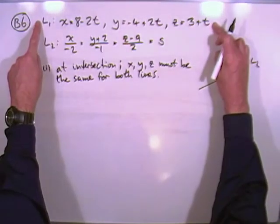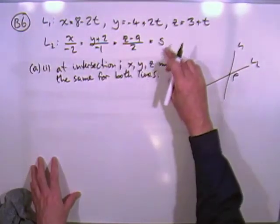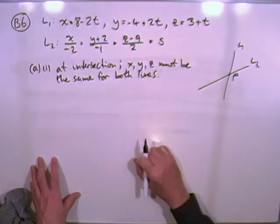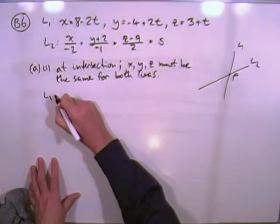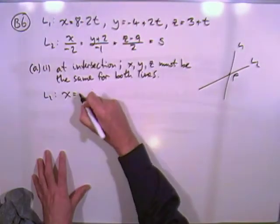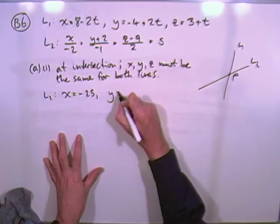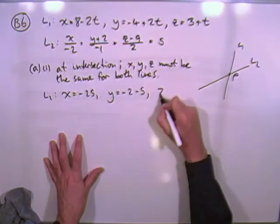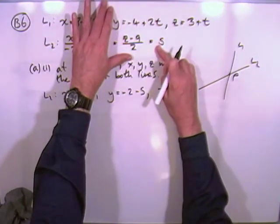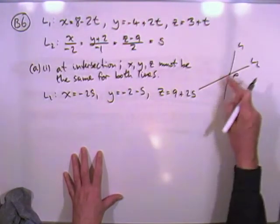Right, well the first line here is in parametric form, that's ideal, but the second one's in symmetric form. So I've put in a parameter S, which means I can rearrange it into parametric form, just by solving the separate little equations. So x will equal negative 2s, y, that'll be negative S minus the 2, put the minus 2 first, minus the S. Z will be 2s plus the 9, we'll put the 9 first, then plus the 2s, so it's the same form as the first line.